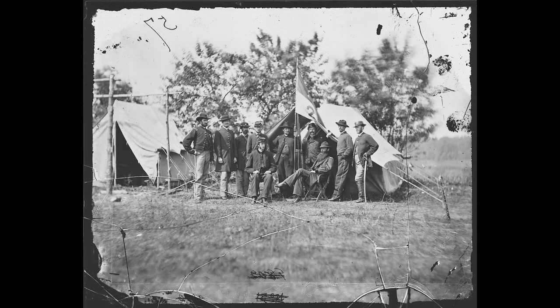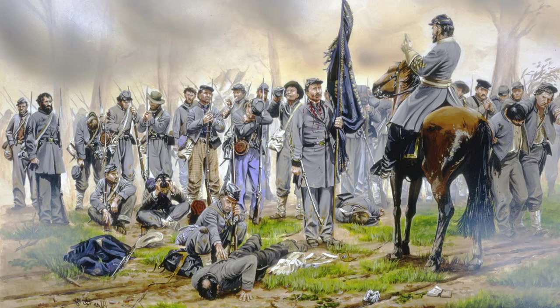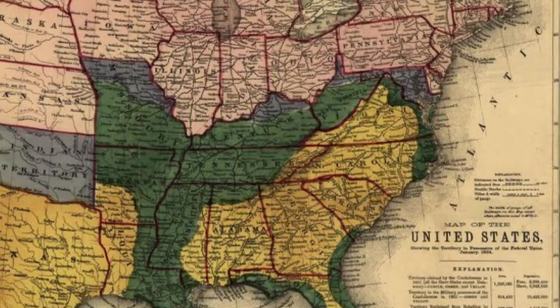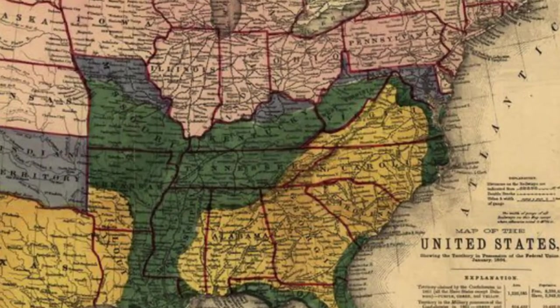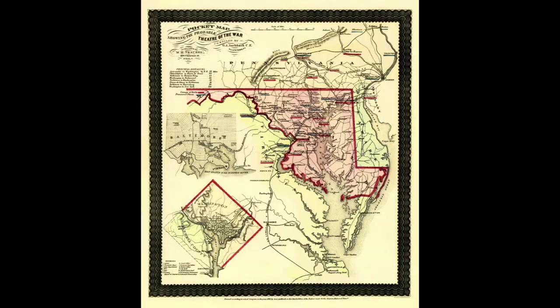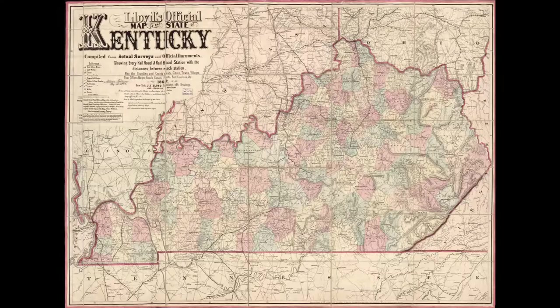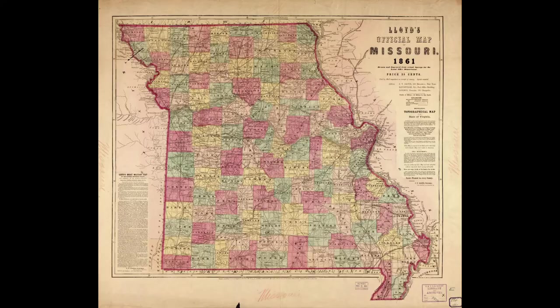The divisions ran deep. American versus American, brother against brother — one day you're my neighbor, and the next day you're my enemy. No deeper were those divisions than in the border states between the North and the South: Maryland, Delaware, Kentucky, and Missouri.